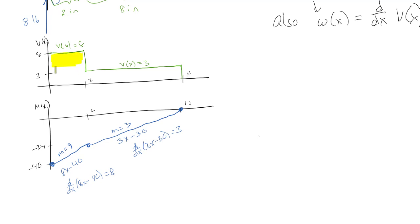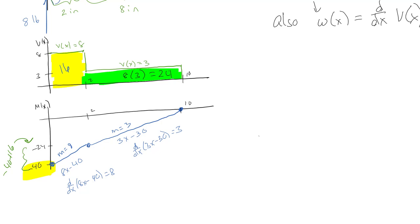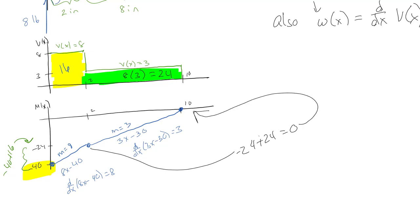The integral is the area under the curve. The area under the shear curve for the first section is 8 times 2 equals 16. We start at negative 40, add 16, and get to negative 24. Then the area in the next section is 8 times 3 equals 24. Starting at negative 24 and adding 24 ends us at 0, which is exactly where the moment diagram should end.